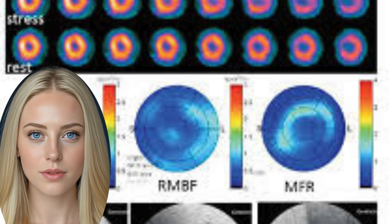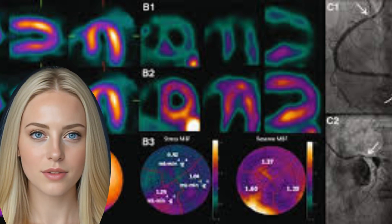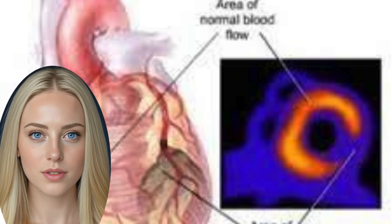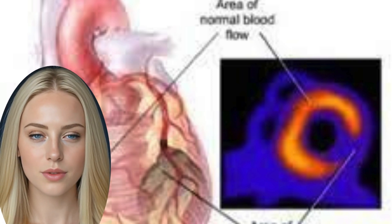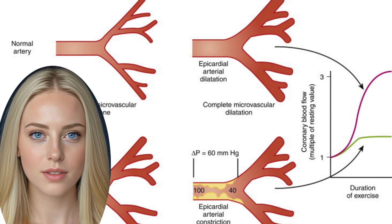A cardiac radionuclide image, or cardiac scintigraphy, is obtained by injecting a radionuclide into the peripheral circulation and imaging with a gamma camera. The emitted gamma rays are focused using a collimator, and the anatomical origin and time of isotope decay is transformed into an image.